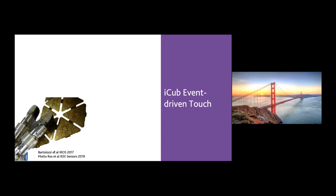Here you see the tactile sensors on the iCub robot — this is the skin. Every little dot is a capacitive sensor. This is what you would see below the fabric covering the iCub. You also have tactile sensors in the fingertip of the robot of the same type of technology.